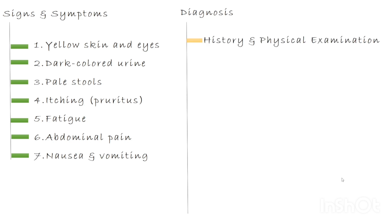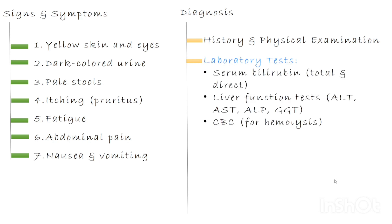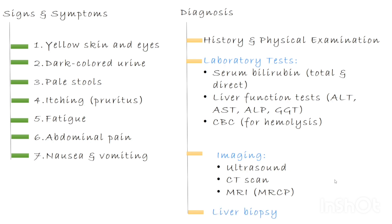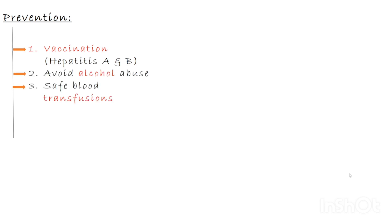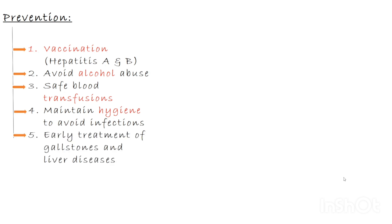Diagnostic criteria: first and foremost, history and physical examination. Laboratory tests include serum bilirubin — total and direct — liver function tests (LFT), and CBC. Imaging techniques include ultrasound, CT, and MRI, and if needed, liver biopsy. Preventive aspects include vaccination for hepatitis A and B, avoiding alcohol abuse, safe blood transfusions, maintaining hygiene to avoid infection, and early treatment of gallstones and liver disease.